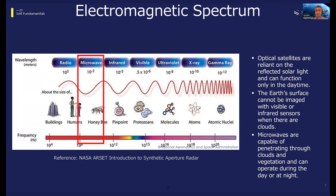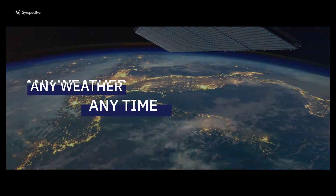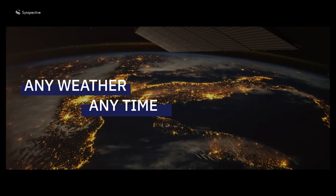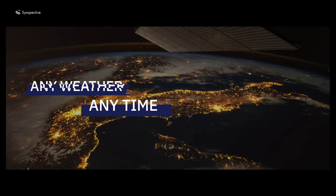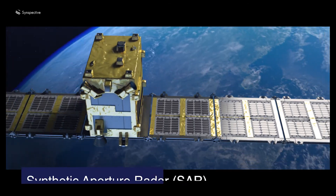Now, the major advantage of observing the Earth's surface with the microwave range is that microwaves are not hindered by the time of the day or the weather conditions, as optical sensors are. Microwave sensors can, in fact, operate under pretty much any weather conditions.